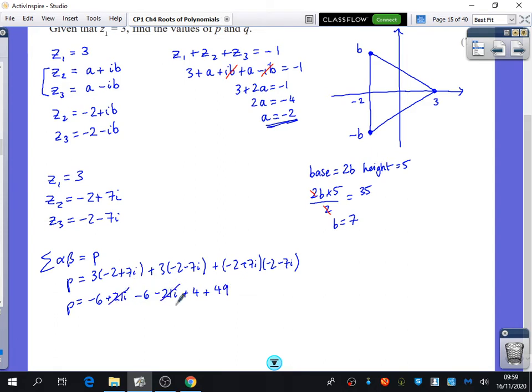That's minus 6 plus 21i minus 6 minus 21i and then this you get plus 4 plus 49. Luckily they cancel. And I think that all came to 41. 49 minus 12 is 37. 37 plus 4 is 41. And that is the correct answer.